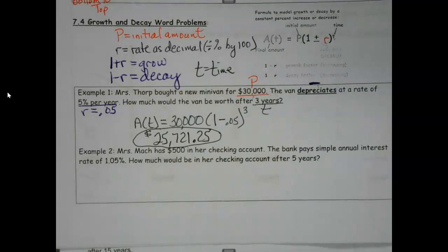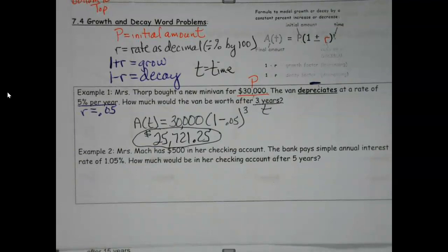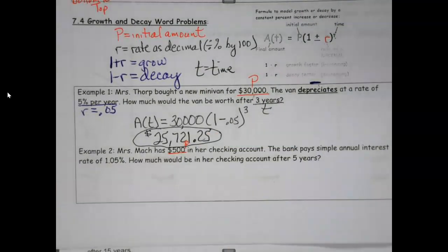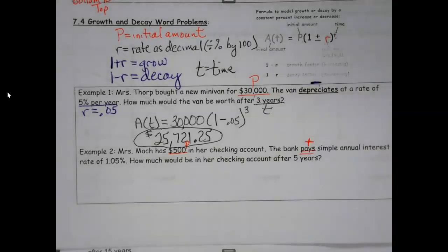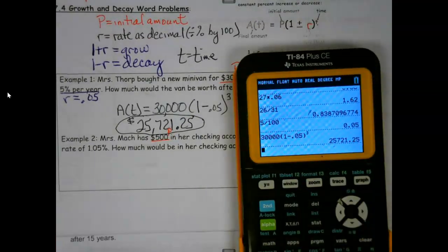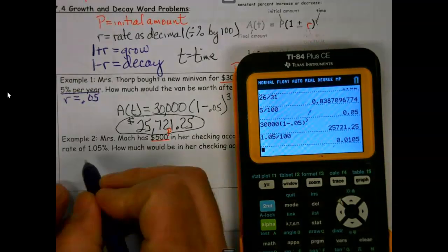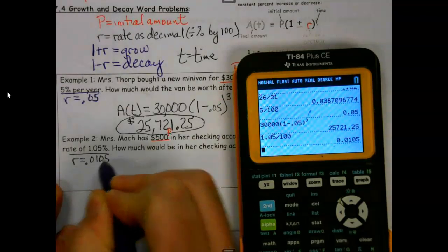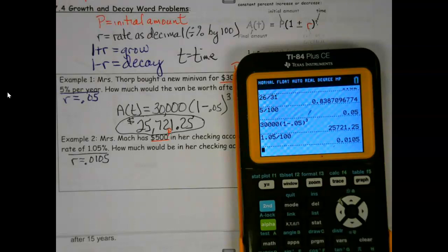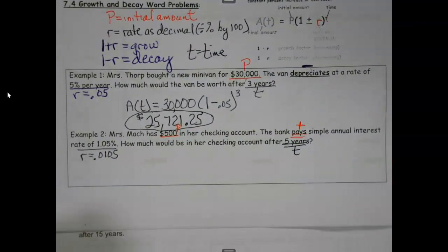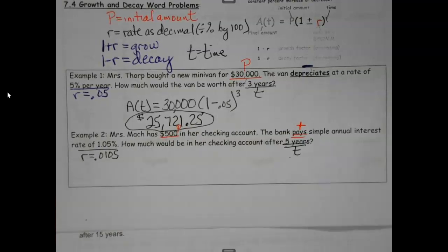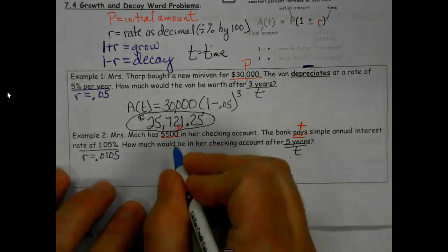Example two — here's the happier way of looking at this. Mrs. Mock has $500 in her checking account — there's my P. The bank pays simple annual interest at a rate of 1.05%. Now, you might think that's already a decimal, but that is not the decimal form of the rate. I need to divide 1.05 by 100, so my rate is 0.0105. How much would be in her checking account after five years? So again, I check: I got P, I got R, I got T — ready to roll.